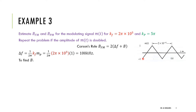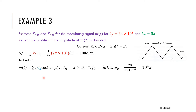To find the bandwidth of the message, we need to see the signal in frequency. Since this signal is periodic, we can use the Fourier series. The period is 2×10⁻⁴ seconds, so the fundamental frequency is 1/T = 5 kHz. In radians, that's 10,000π rad/s. But this is just the fundamental frequency, not the bandwidth.